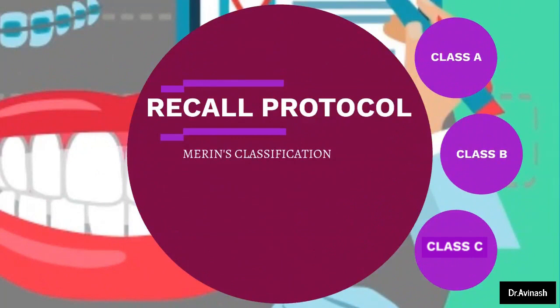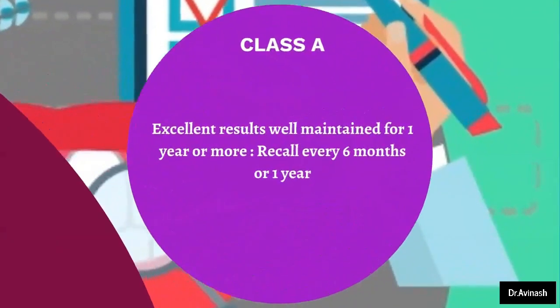Once all treatment is done, it is important to have a clear recall protocol for the patient. Marin has given a very good classification for when to recall patients based on their condition. Patients are classified into three classes: Class A, Class B, and Class C. Class A patients have excellent treatment results and have maintained very well for one year or more — they have brushed their teeth properly, not missed any recall, and their oral condition is excellent. These patients can be recalled every 6 months to 1 year.